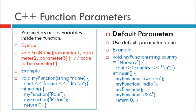The function MyFunction is called four times. First, MyFunction Sweden. MyFunction India. Third, MyFunction empty. Here Norway will be called because Norway is the default parameter. Fourth, MyFunction USA, return 0.